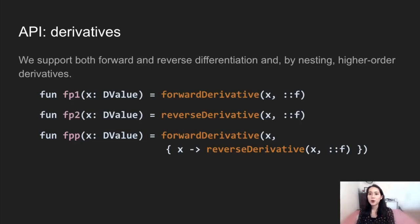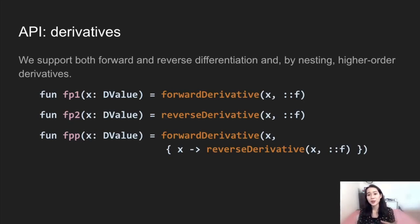We can support both forward and reverse differentiation, and we can see here that by nesting, we can also compute higher-order derivatives. We also support the derivatives of multivariate functions, functions taking or returning user-defined types, or tensor functions — so that's like computing the Jacobian or the Hessian.